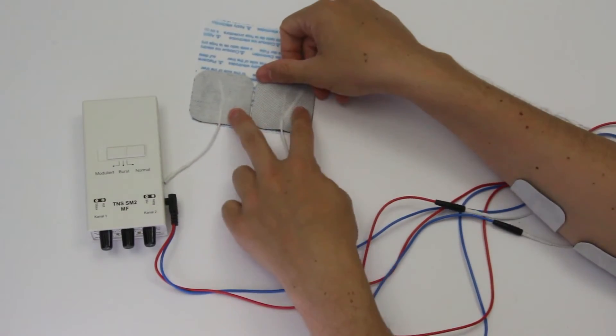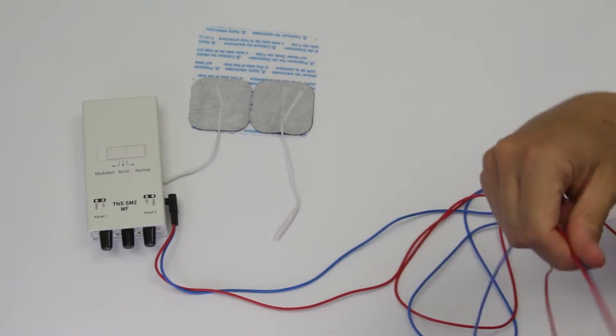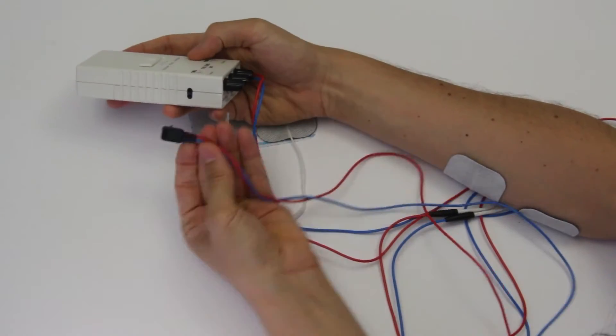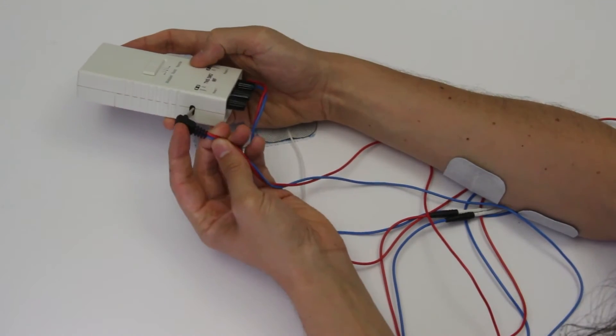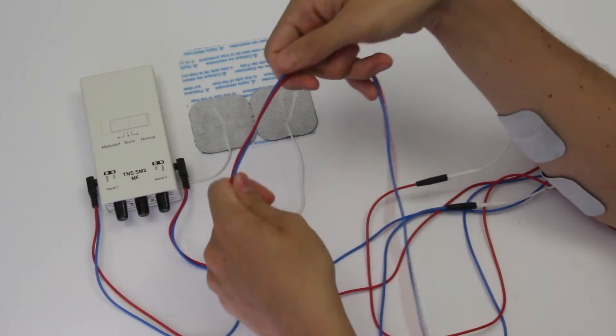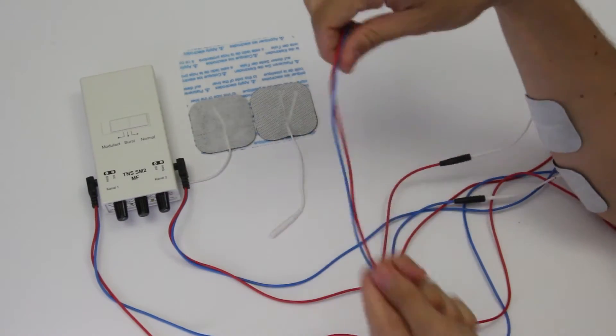Now we can actually wire another channel, that means another muscle. Again we grab a cable for that and we plug that into the channel two of this machine. We're going to plug this cable onto two electrodes because once again we need two electrodes to make one EMS channel.